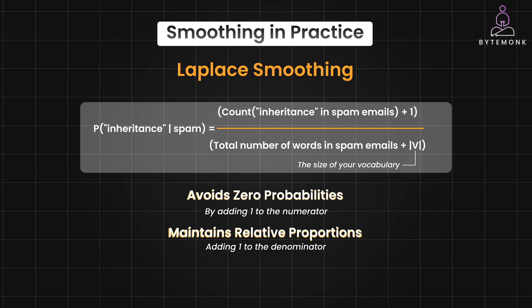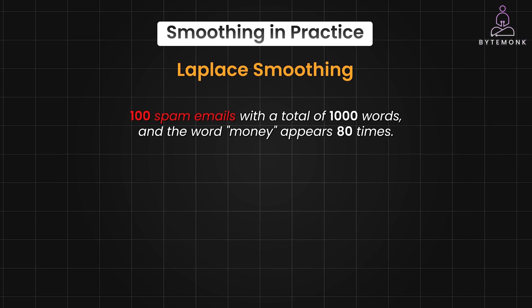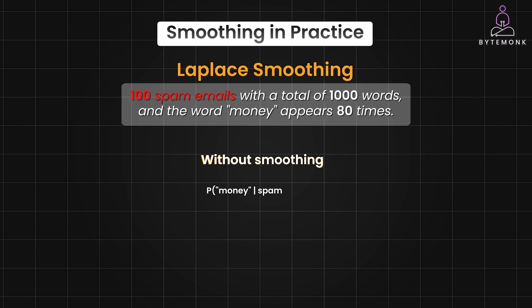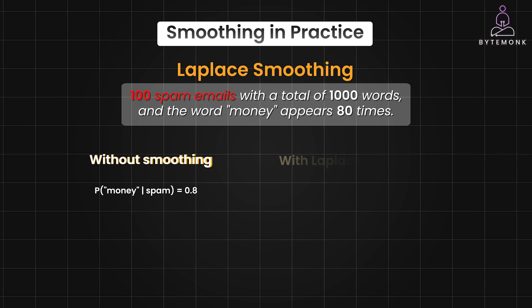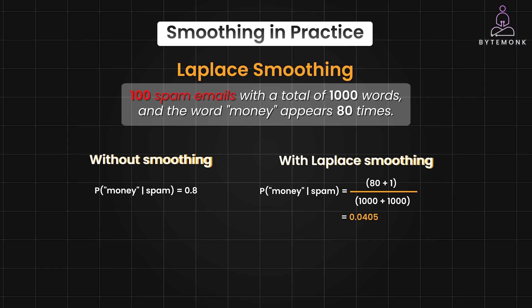Let's say you have 100 spam emails with a total of 1,000 words and the word 'money' appears 80 times. Without smoothing, the probability of the word 'money' given an email is spam will be 0.08. With Laplace smoothing and a vocabulary of 1,000 words, this probability would be (80 + 1) / (1,000 + 1,000), which gives us 0.0405. Without smoothing, 0.08 means that 80% of the time when you see the word 'money,' the email is spam — a strong indicator of spam. With smoothing, 0.0405 suggests that only about 4% of the time when you see the word 'money,' it's in a spam email, which seems much less indicative of spam.